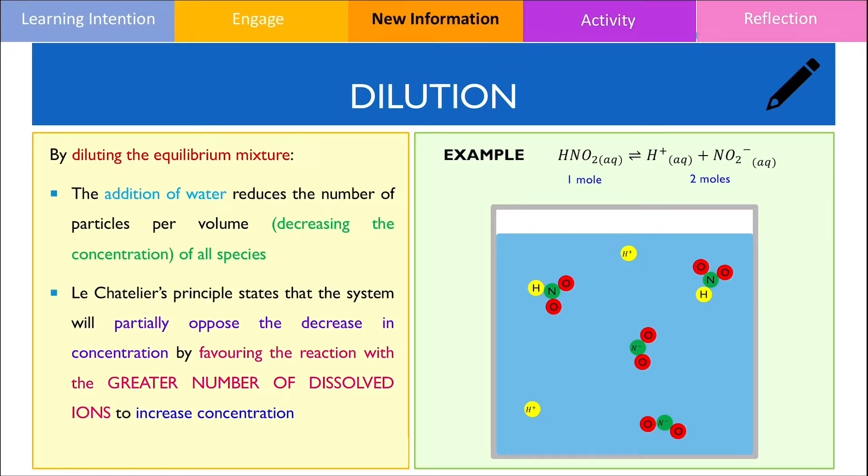In this particular reaction, because there are more dissolved ions on the products, equilibrium will shift to the right favouring the dissociation of HNO2 into H+ ions and NO2- ions. Consequently, the overall number of dissolved ions have slightly increased to counteract the effect of dilution.